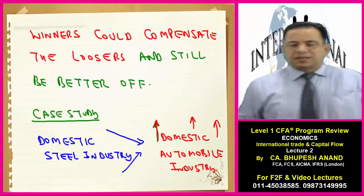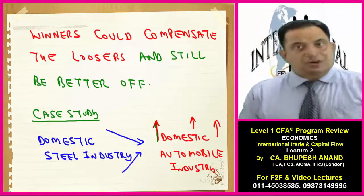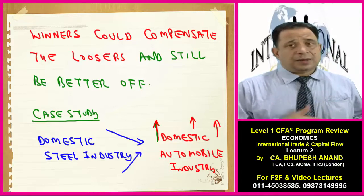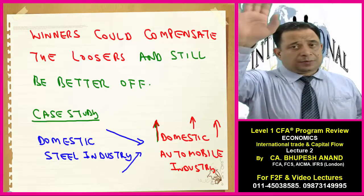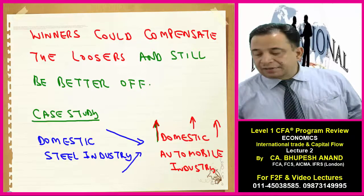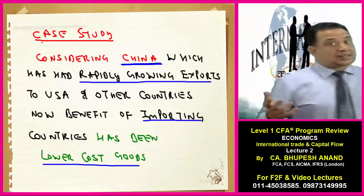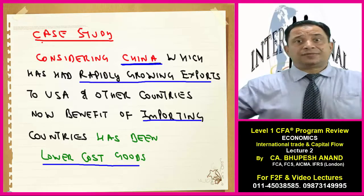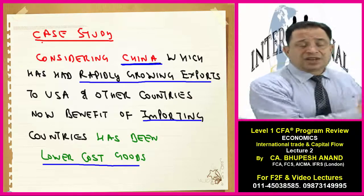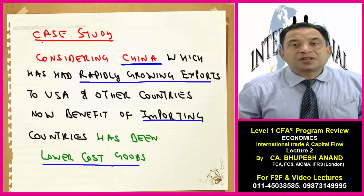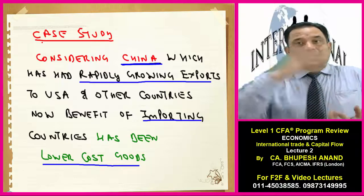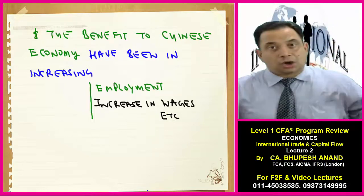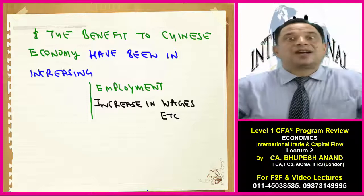Winners could compensate the losers and still be better off. In the steel and automotive industry case, domestic automobile manufacturers were purchasing raw metal at a costlier rate, but now because import is allowed, they can purchase at a lower cost and reduce cost per automobile, which will be passed on to the customer. China is doing huge work in trade flows, exporting to USA and other Asian countries. If USA purchases textile from China at a lower cost, that savings passes to consumers, while in China employment is generated and economies of scale are achieved — economic welfare overall.